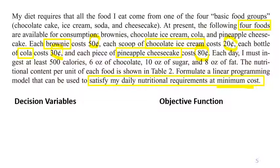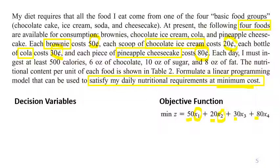The objective function is about minimizing the cost. So when we collect all terms related to money: 50 cents for each brownie we buy or eat, 20 cents for each scoop of chocolate ice cream, 30 cents for each bottle of cola, and 80 cents for each piece of pineapple cheesecake. I put x1, x2, x3, and x4 in the objective function and define them later in the decision variable definitions.